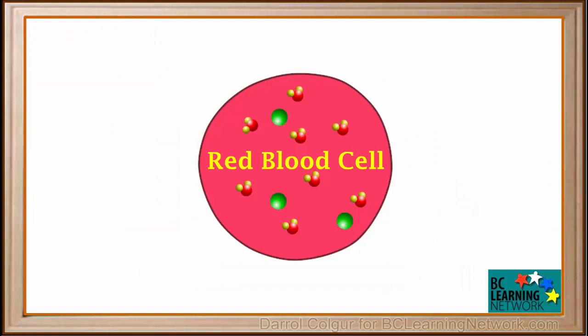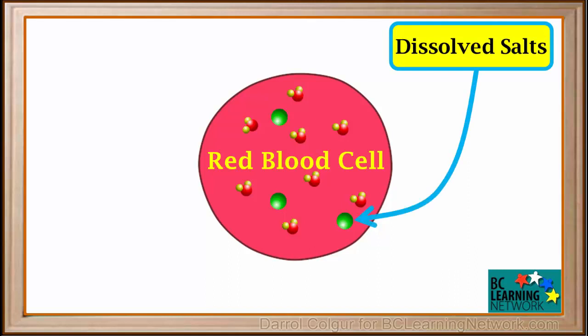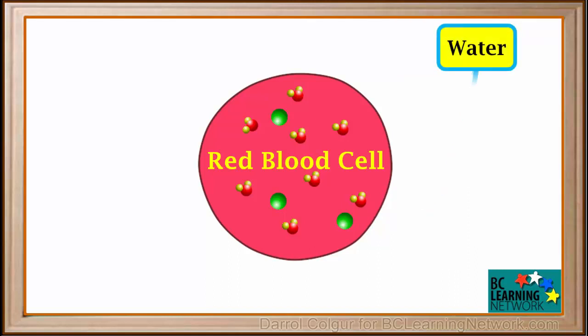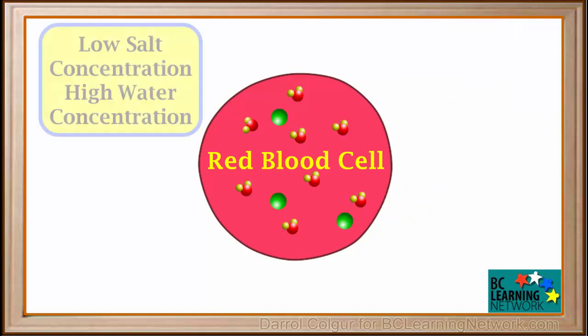We will see how osmosis works with red blood cells. This represents a red blood cell. All blood contains some dissolved salts. Dissolved salts are represented here by green spheres, and these represent water molecules. Inside the cell, the concentration of dissolved salts is relatively low, and the concentration of water is relatively high.